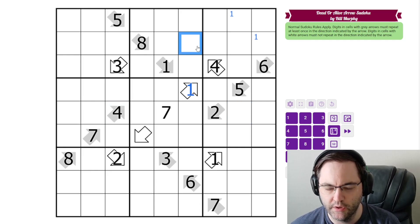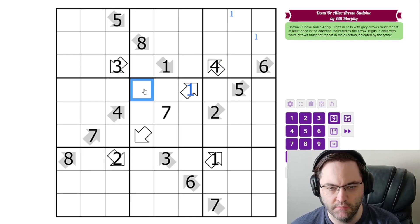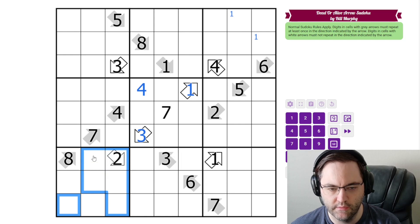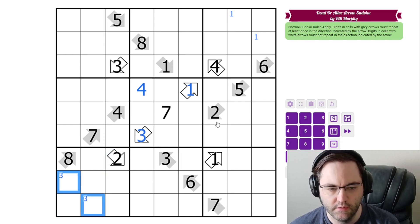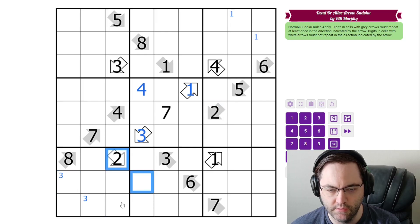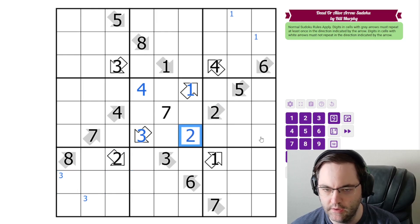Same thing with 4 over here. 4 can't go here because of the arrow, can't go here because of the box and column. So this is a 4. Here we have 3. Can't go here or here because of this 3. So this is a 3. And 3 is not in these cells. So just like the 1, we have 3 in one of two positions. And then 2 here. 2 can't go in these cells. So it goes here.